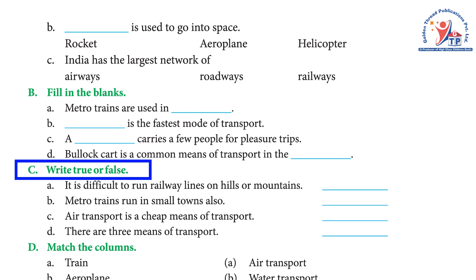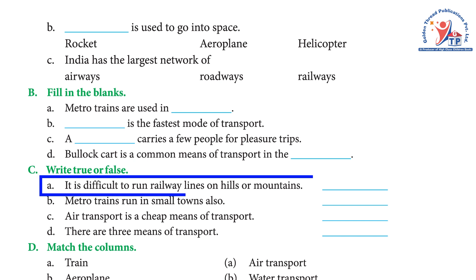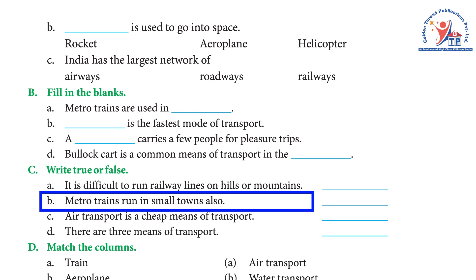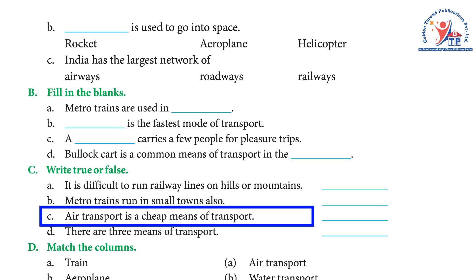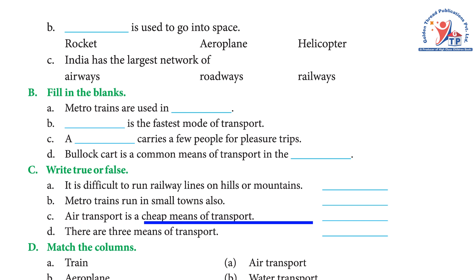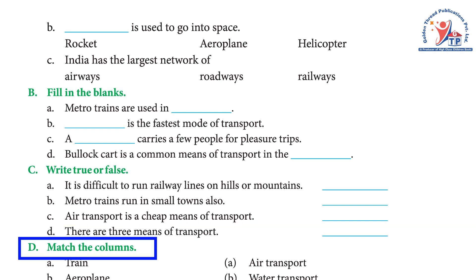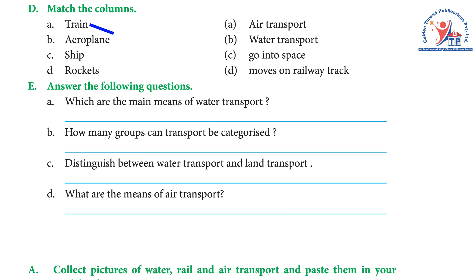Exercise C: Write true or false. A) It is difficult to run railway lines on hills or mountains. Answer: true. B) Metro trains run in small towns also. Answer: false. C) Air transport is a cheap means of transport. Answer: false. D) There are three means of transport. Answer: true.